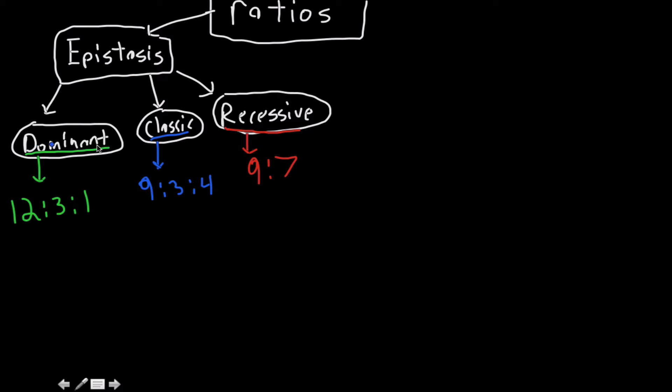But epistasis in these contexts that we're talking about is a linear type of thing. So another type of ratio that you should probably know is the codominant and incompletely dominant ratios.